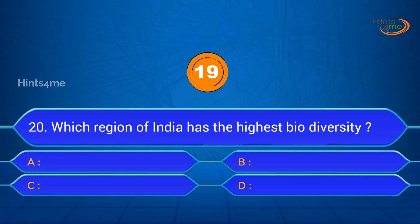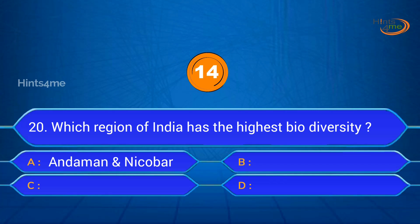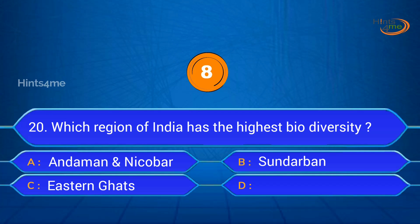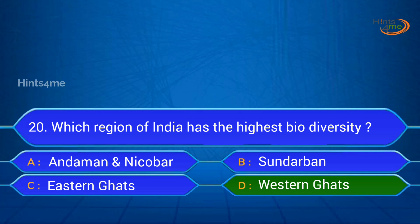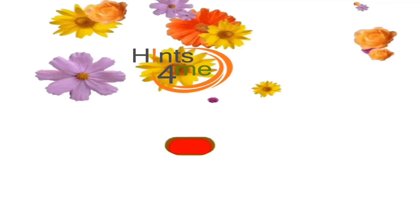Question 20: Which region of India has the highest biodiversity? A. Andaman and Nicobar, B. Sundarban, C. Eastern Ghats, D. Western Ghats. Answer: Western Ghats.